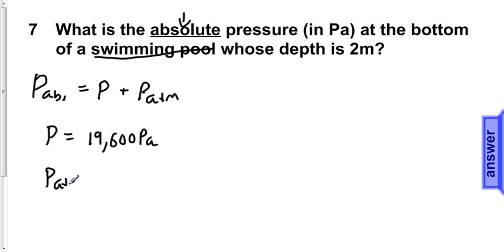The pressure due to our atmosphere is given as 1.013 times 10 to the 5th pascals.